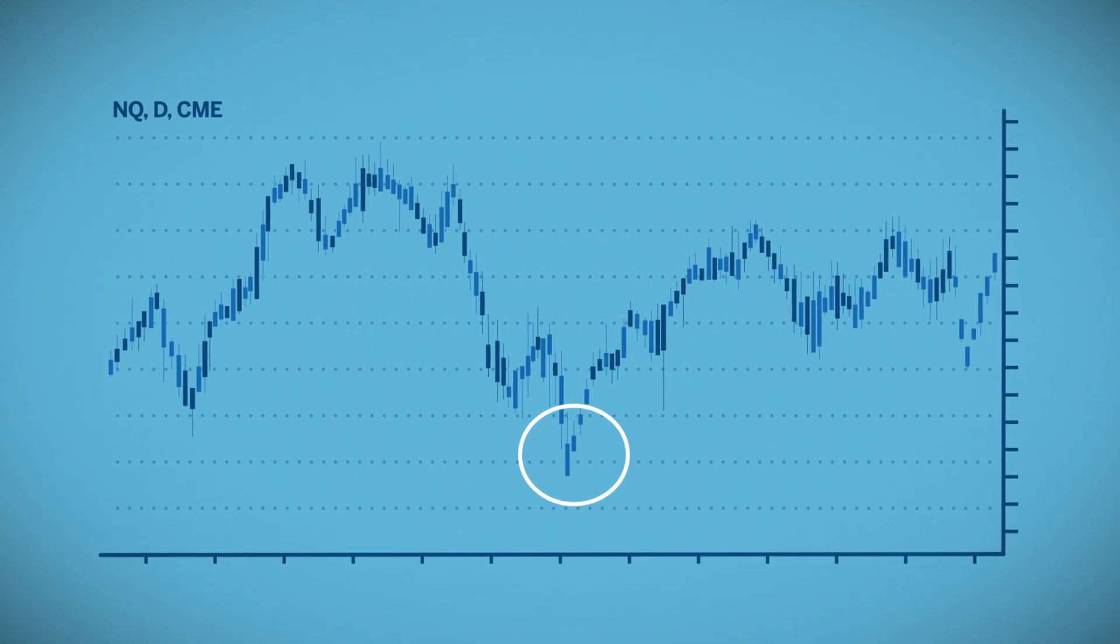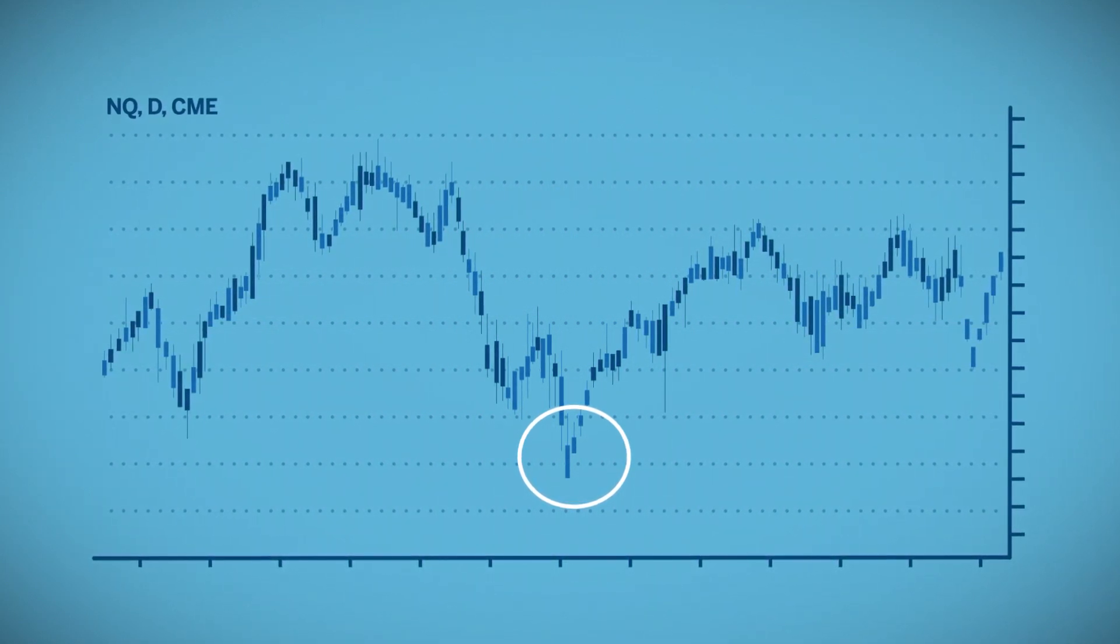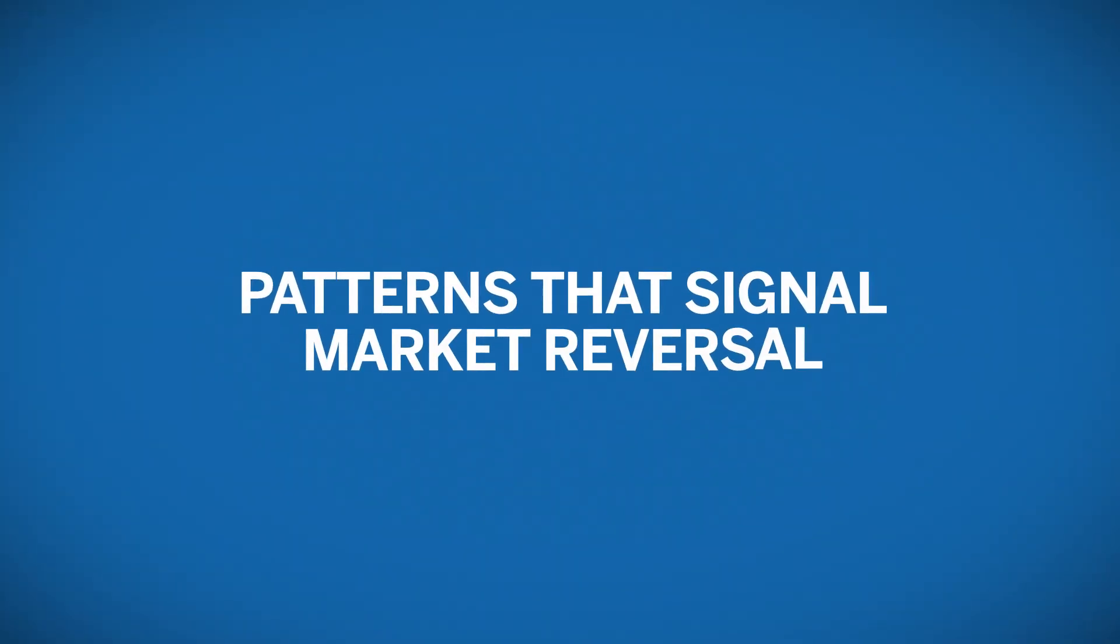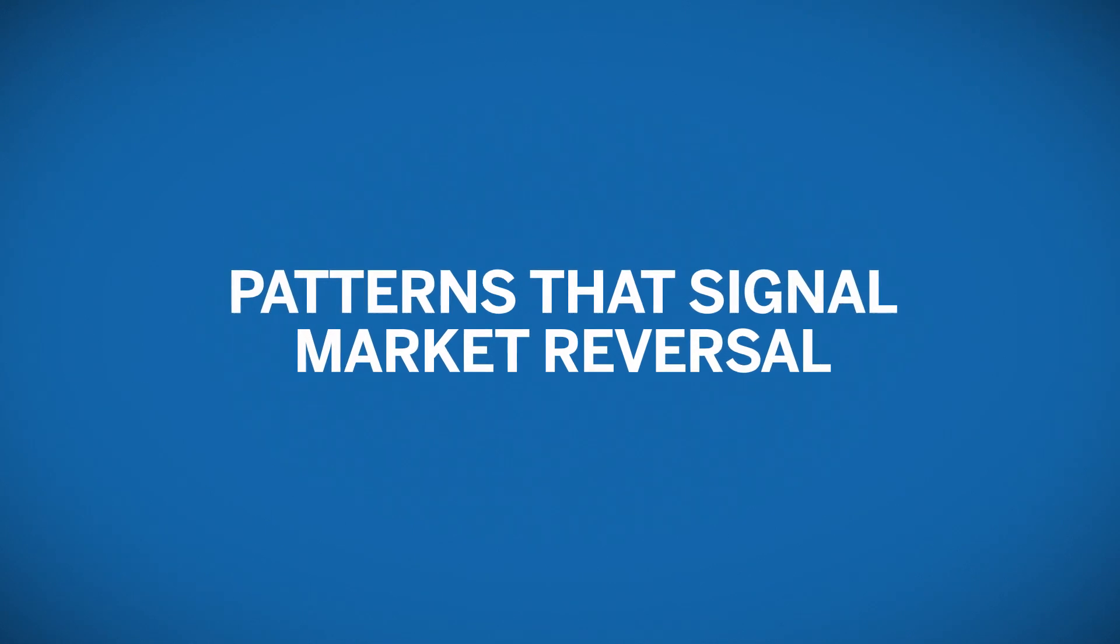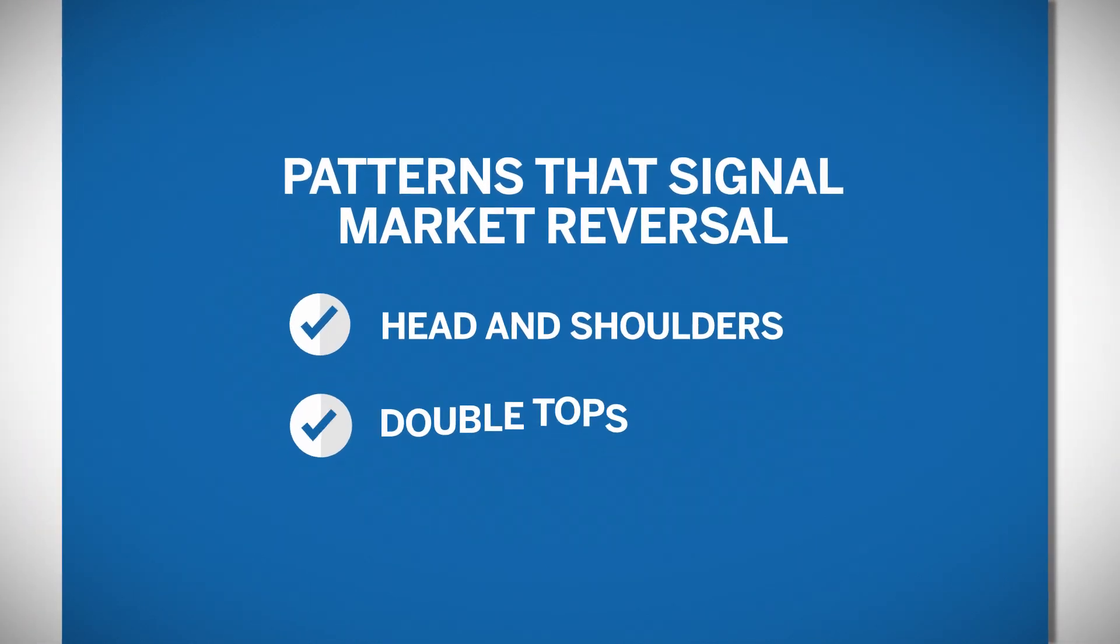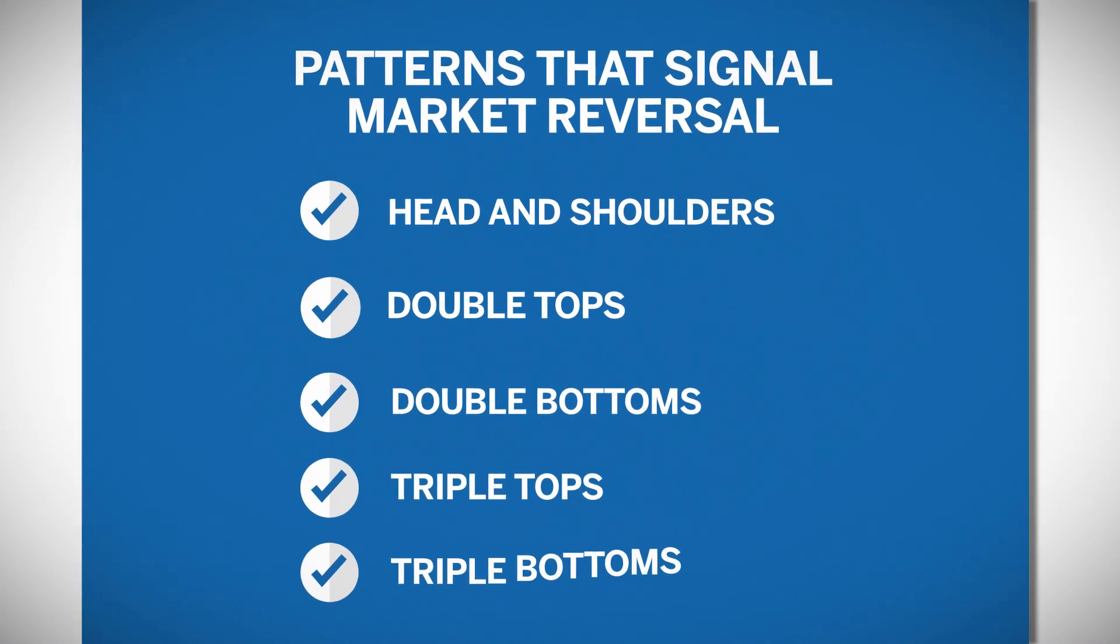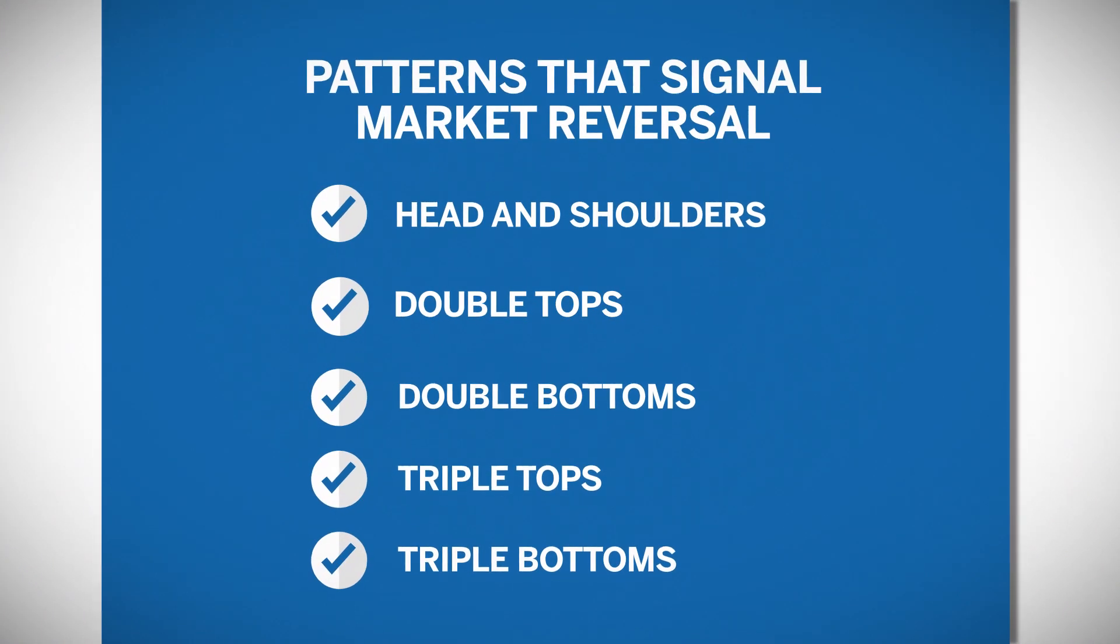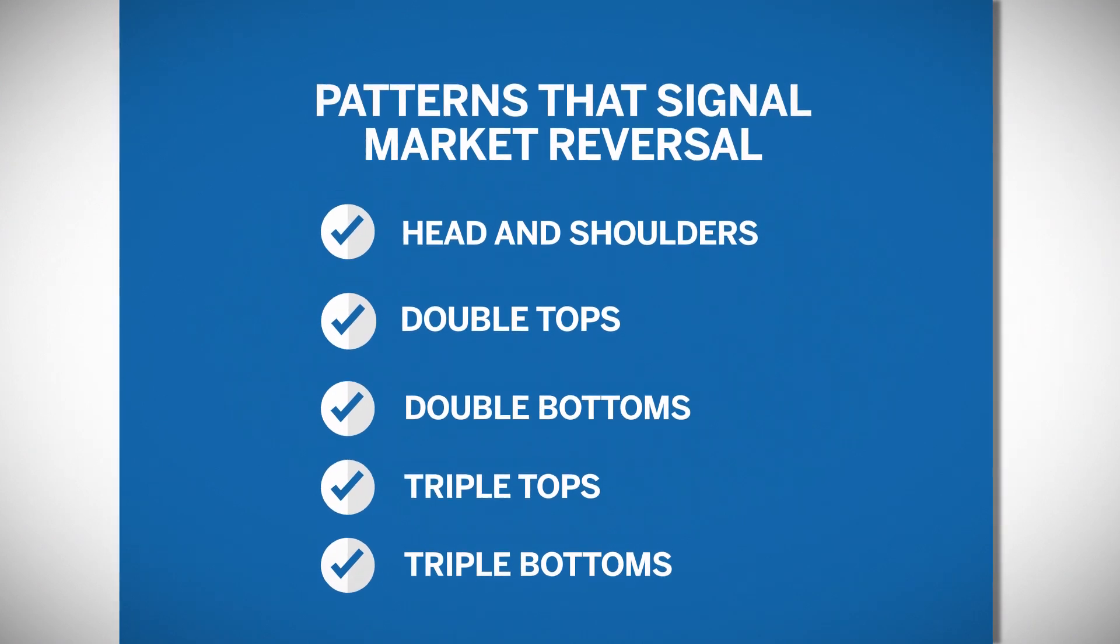Market tops and bottoms can be the first signal that a market is reversing. Traders may use these indications to form decisions about trades or look for more complex patterns like head and shoulders, double tops, double bottoms, and triple tops and bottoms. These patterns are signals that a market might reverse direction in the future.